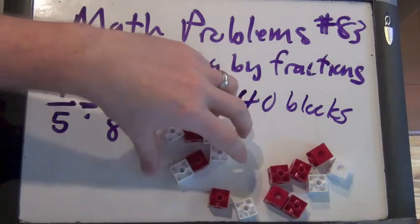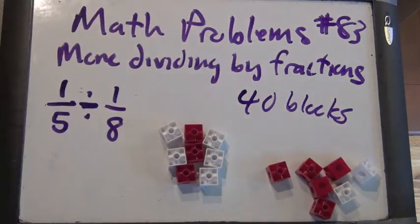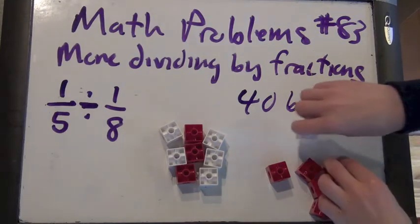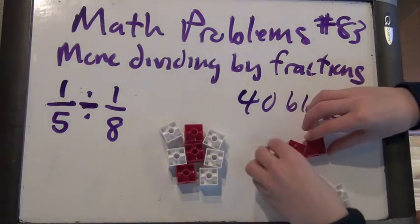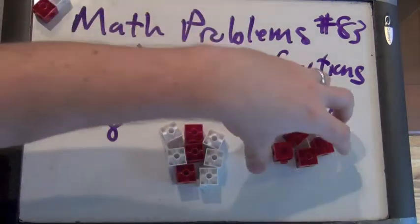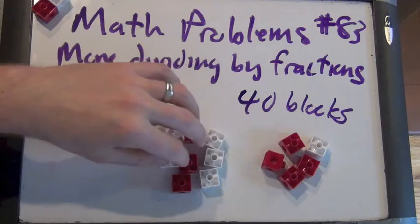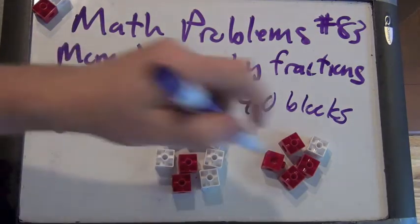So let's quickly make 8 blocks over here. There's 6, 7, 8. Okay. What would be 1 eighth of 40? 5. Okay. Quickly make 5 blocks. So, what do you think 1 fifth divided by 1 eighth is going to be? Maybe it's going to be 8 over 5.